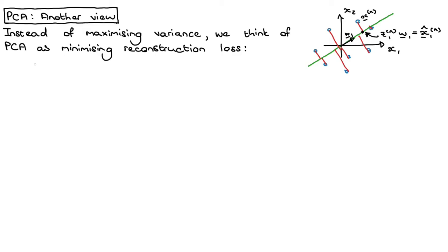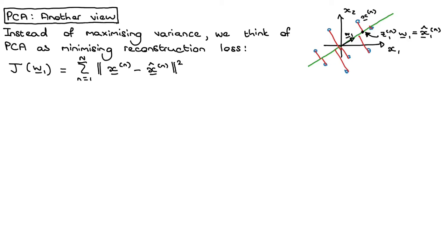Let's write down the reconstruction loss. The reconstruction loss J, which is a function of W1 — for different W1 I will have different values for my reconstruction loss — is simply the sum over all my items of the Euclidean distance between my item xn and my reconstruction. In this example we're looking at the 1D projection, but the same intuition holds for the higher-dimensional case.